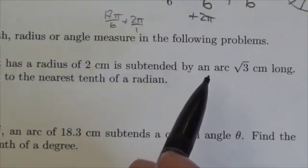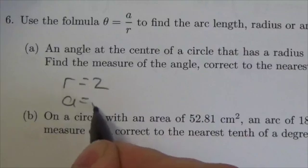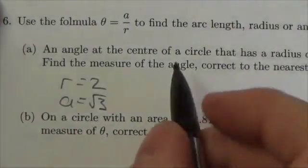It is subtended by an arc root 3 centimeters long, so our arc A equals root 3. We need to find the measure of the angle correct to the nearest tenth of a radian.